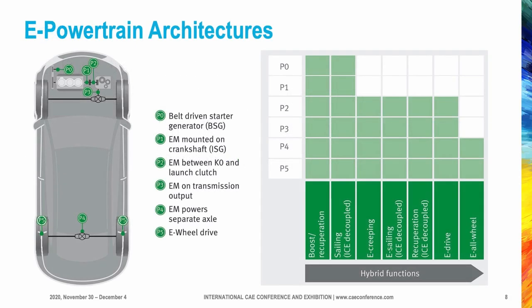The automotive industry is continuously developing new electrified powertrain architectures and vehicle technologies to optimize vehicle fuel consumption and reduce carbon dioxide and other pollutant emissions to meet regulations. Some of the main drivers of powertrain electrification are improved efficiency, displacement of fossil fuel as a primary energy source, reduced environmental impact at the site of utilization, and reduced cost of fueling. E-powertrain architectures are generally classified according to hybrid functions and electric machine connection point.